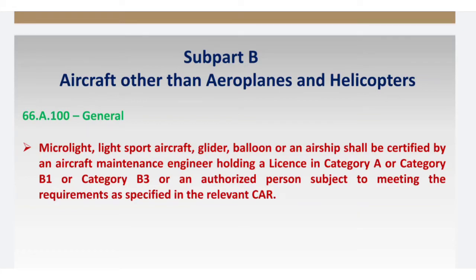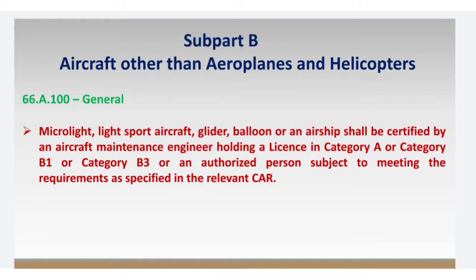Hello friends, welcome to our YouTube channel Technical Aviator. We are covering CR-66 Subpart B and Subpart C. Subpart A deals with licensing requirements applicable for aeroplanes and helicopters. Subpart B covers licensing requirements for aircraft other than aeroplanes and helicopters — for example, microlight aircraft, light sport aircraft, glider, balloon, or airship. To certify these aircraft, you need an AME license with category A, B1, B2, B3, or be an authorized person.